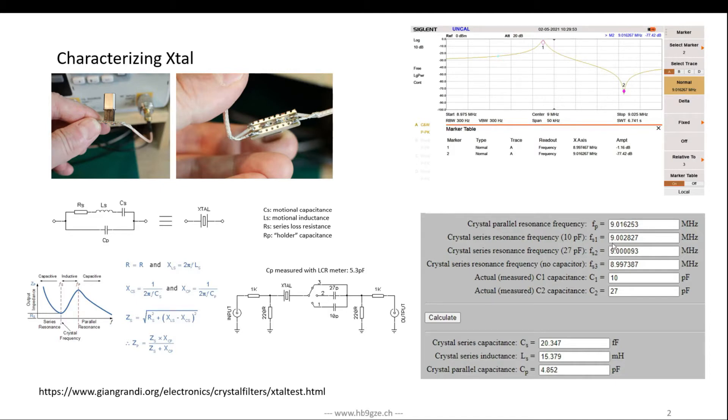You measure the parallel resonance frequency and the series resonance frequencies with these three capacitors: 10, 27, and none. Then you can calculate Cs, Ls, and Cp. The calculated Cp is 4.8 and I measured 5.3, so that's pretty close. The Cs, the series capacity, is very low, always in the femtofarads. This is 20 femtofarads and 15 millihenry for the inductance.